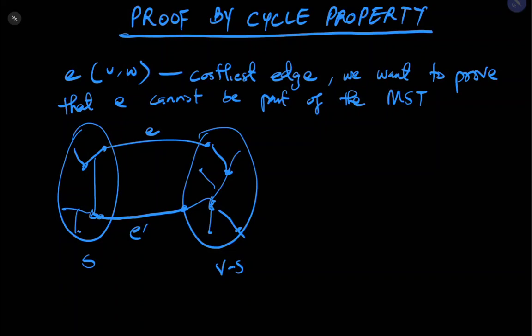Now let's consider a minimum spanning tree. Let's call it T. And the minimum spanning tree consists of T plus E, the most expensive, the costliest edge. When we attach E prime, we say T plus E plus E prime forms a cycle.